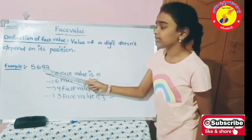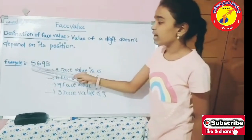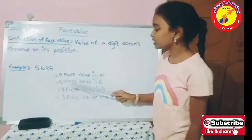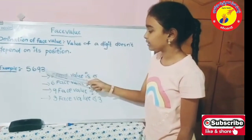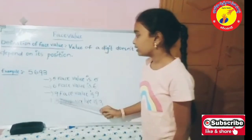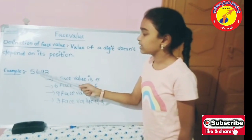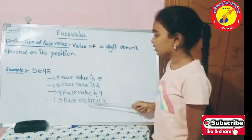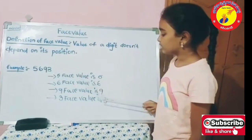Example, 5693. 5 face value in 5693 is 5. 6 face value in 5693 is 6. 9 face value in 5693 is 9. 3 face value in 5693 is 3.